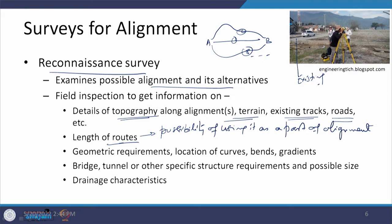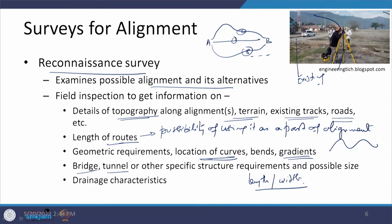What are the categories of roads available in that area, their route lengths, and the possibility of using them as part of the alignment? When the direction changes, we identify locations where the change occurs — these will be curve locations. If there are undulations, we see what type of gradients exist and whether we need to ease them. We also assess if specific features like bridges or tunnels are required, their length, width, number of lanes, and drainage characteristics — whether they are the same as depicted in maps or have changed.